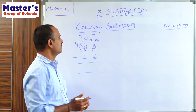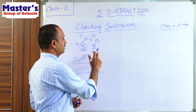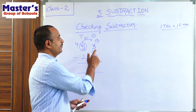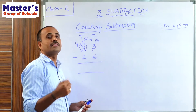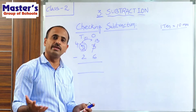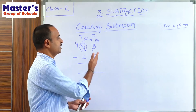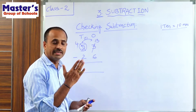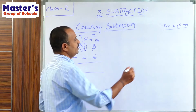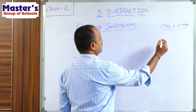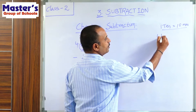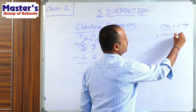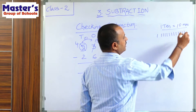Now do the subtraction. The first number is 13 and the second number is 6. Draw 13 lines: 1, 2, 3, 4, 5, 6, 7, 8, 9, 10, 11, 12, 13.